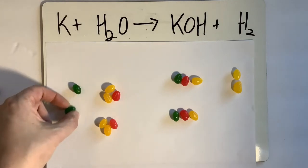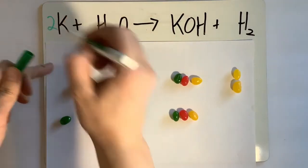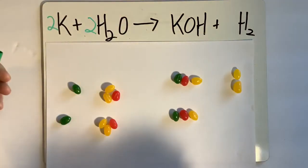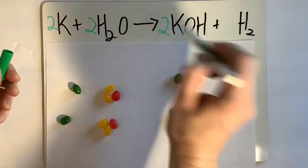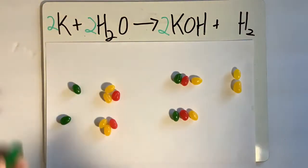So the way I'd write that, since I had two of these, write a two as my coefficient. I had two waters, two is my coefficient, two KOHs (potassium hydroxide), and then I just get my 1H2. So now my equation is all balanced, and I have a delicious snack.